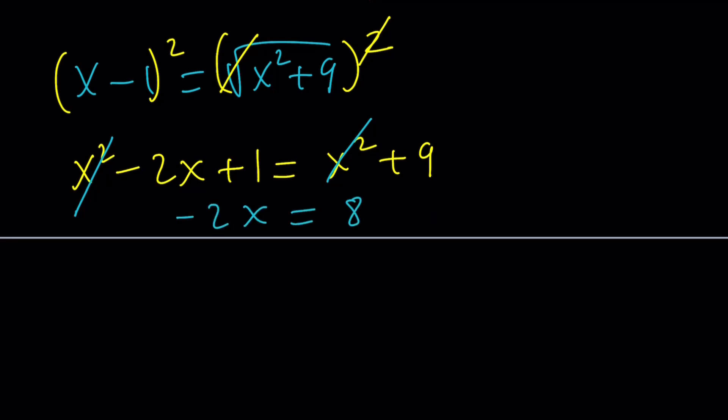Divide both sides by negative 2 or just think: negative 2 times what number equals 8? And the answer is negative 4. So x equals negative 4 is the solution to this equation, or is it? Let's find out.